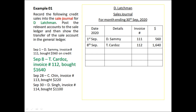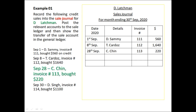The second transaction: 8th September, T. Cardos, invoice number 112, bought $1,640 worth of goods on credit. Place the date — 8th September — in the date column. The detail is who we are giving credit to, which is T. Cardos. Place invoice number 112 in the invoice column, and $1,640 in the amount column.